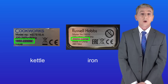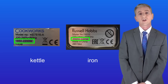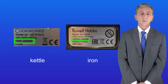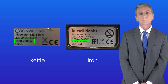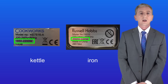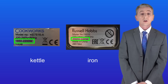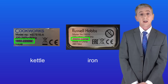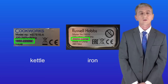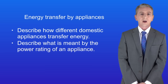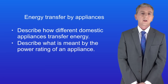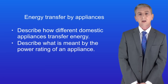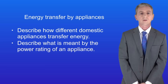You'll find plenty of questions on energy transfers and appliances in my revision workbook — you can get that by clicking on the link above. In the next video we're going to look at how we can use the power rating for an appliance to work out the total energy transfer when the appliance is in use. So hopefully now you should be able to describe how different domestic appliances transfer energy and what's meant by the power rating of an appliance.